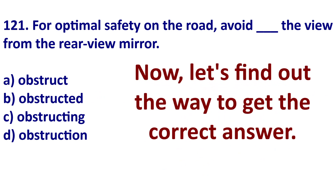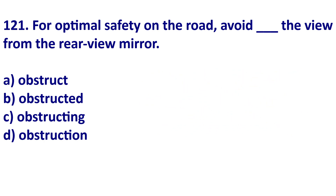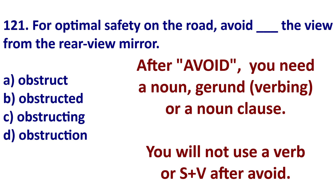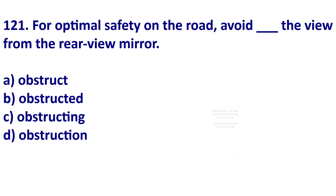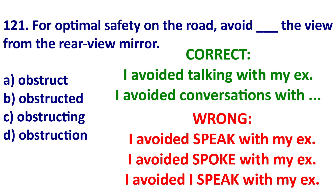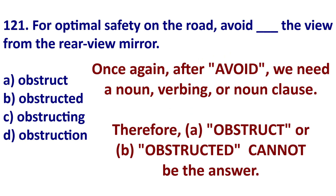Now that we have the vocabulary, let's get the answer. The first thing you need to know is that after 'avoid,' you need a noun form — you can have a noun, a gerund (which is verb-ing), or a noun clause. For example, 'I avoided talking with my ex-girlfriend' or 'I avoided conversations with my ex-girlfriend.' It would be wrong to say 'I avoid speak' or 'I avoid spoke' because those are verb forms.